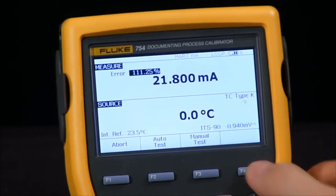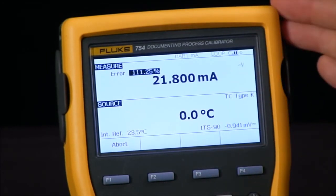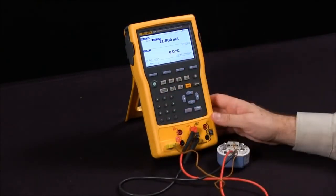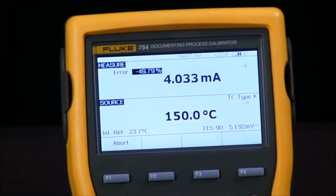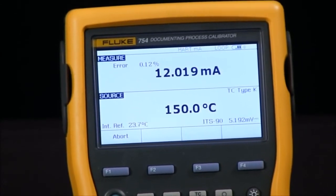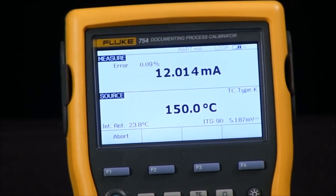What I can do now is just start an auto test, and the 754 will source through the thermocouple and it will read back the milliamp values. This will take a few seconds because I do have the 10 second delay built into it.